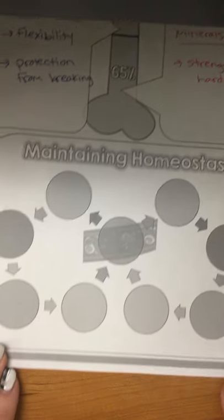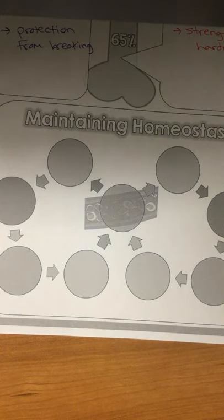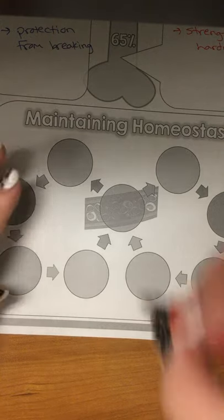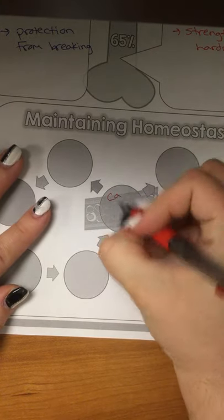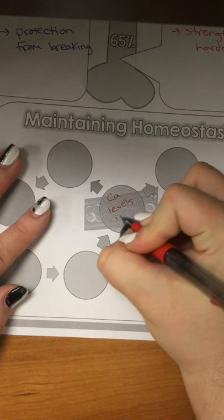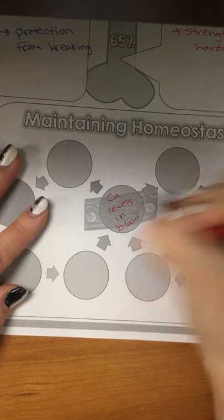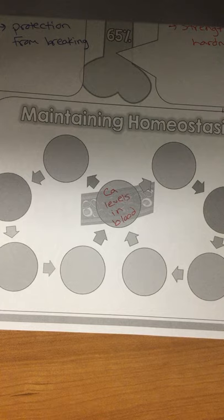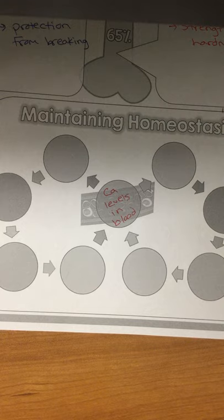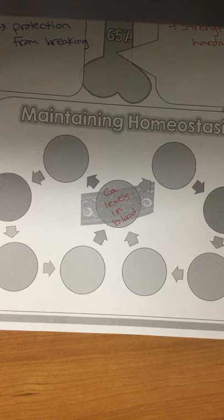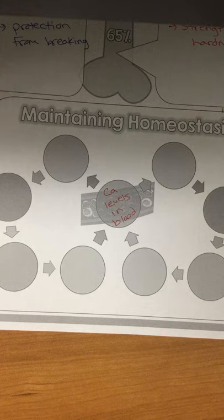On the bottom here, we need a certain amount of calcium in our blood. Ca is calcium, by the way. But if we have too much calcium in our blood, then that can cause issues with nerves and muscles working. If we have too little, then it can also cause issues. So when we say homeostasis with calcium, what does our body do to keep the levels normal so that our nerves and muscles and everything else can work correctly?